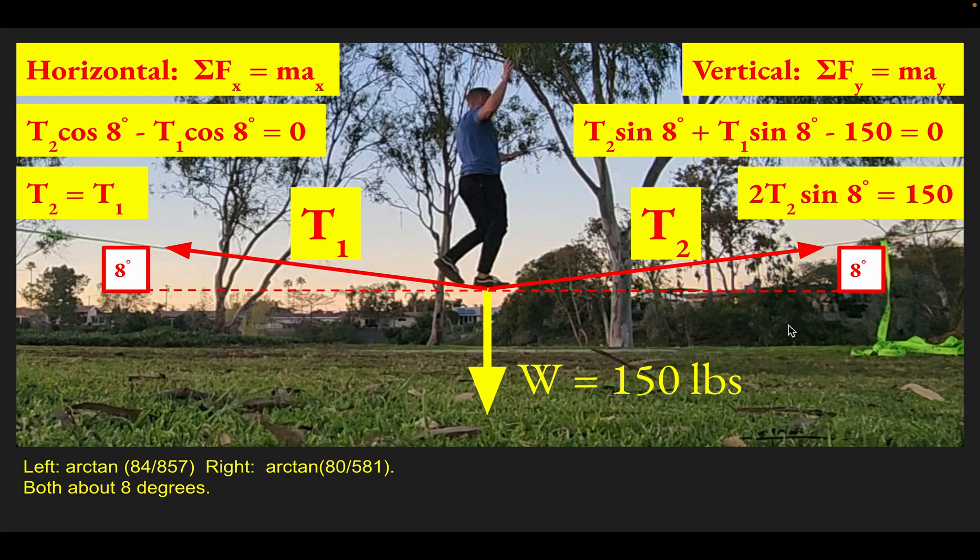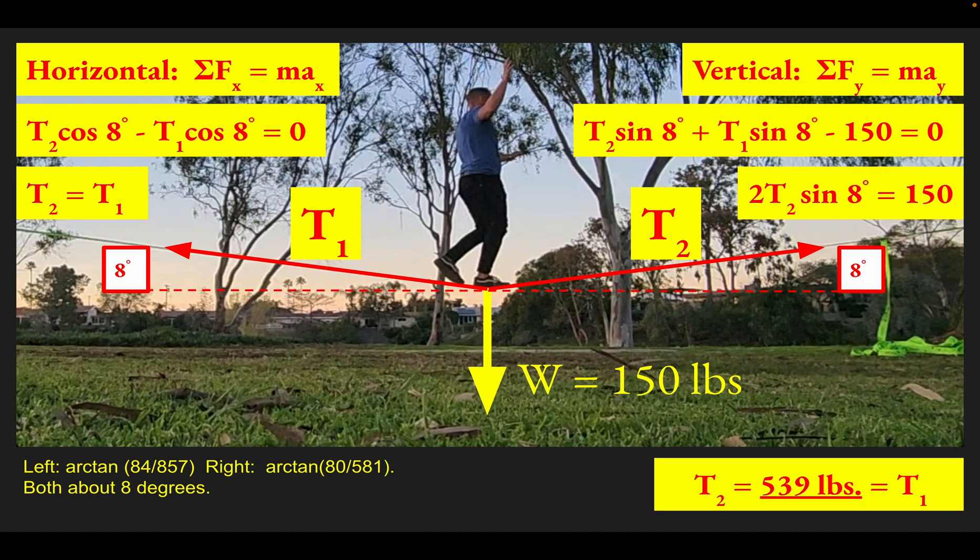T2 is our only unknown now, so we can solve for T2. The tension in that line on both sides is 539 pounds. You don't want to tie these slacklines to trees that are too skinny, because you could break them or even uproot them if they're too thin.